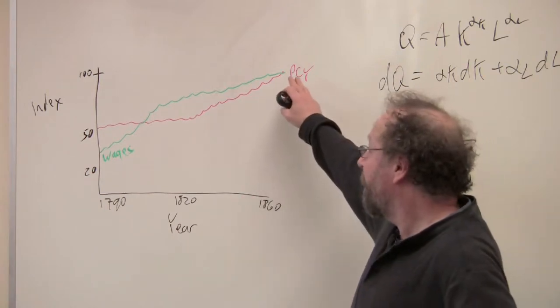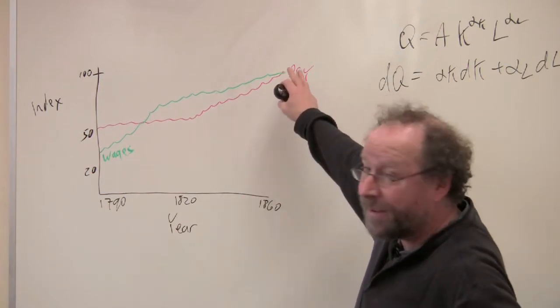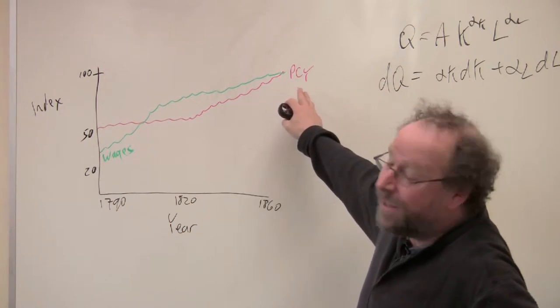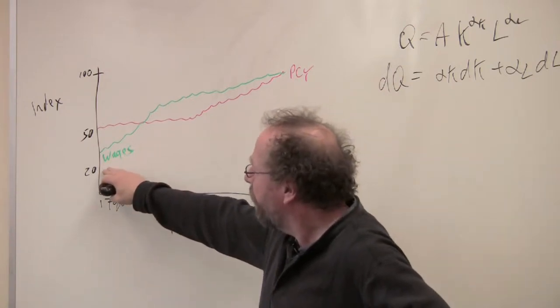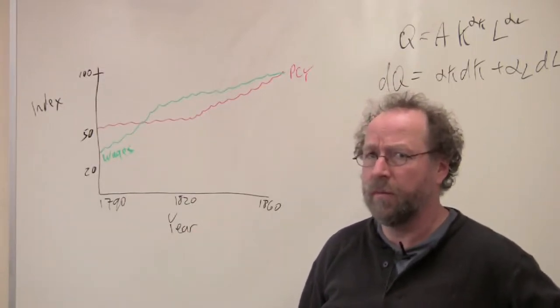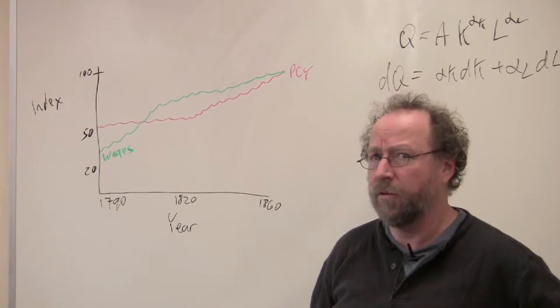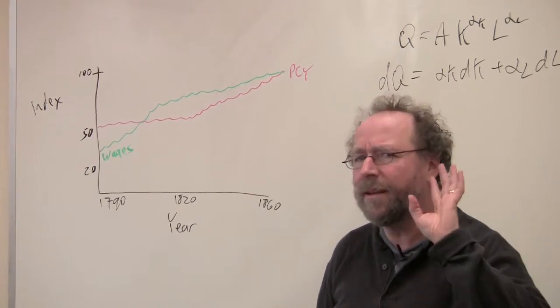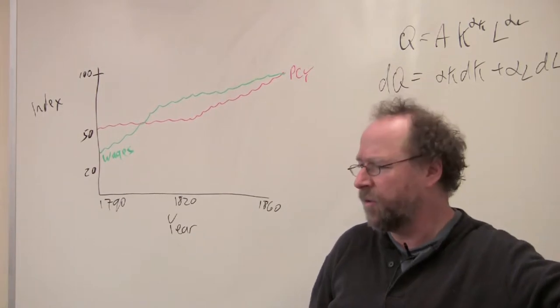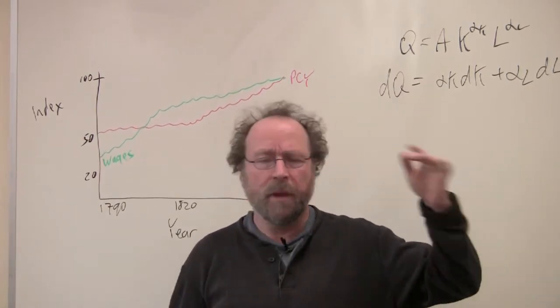So if they end at about the same point, by definition, we define where they end as 100. But most wages start from a lower level, and most of the growth in wages comes earlier, during a period when there's very little growth in the economy. That's something to keep in mind for when we're going to talk about workers and wages later.